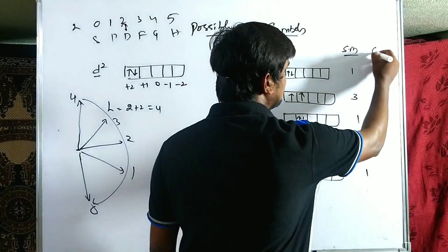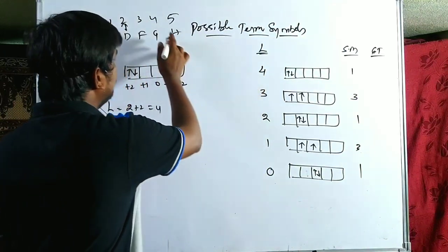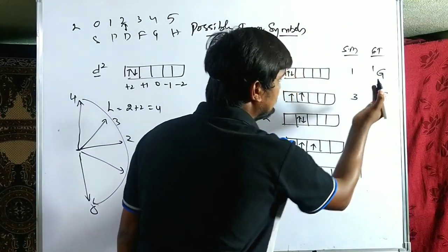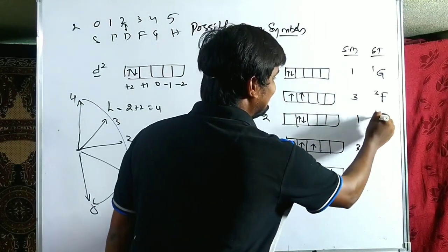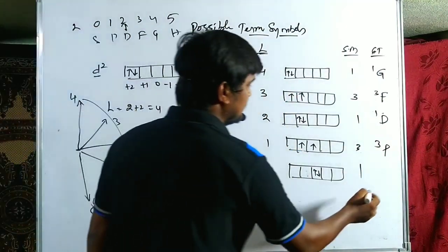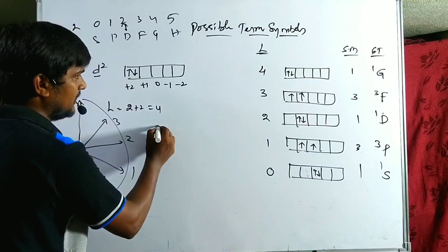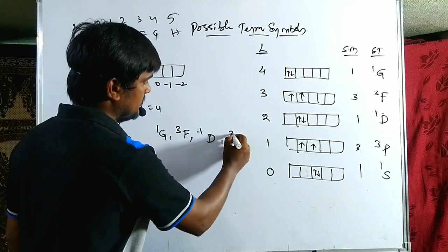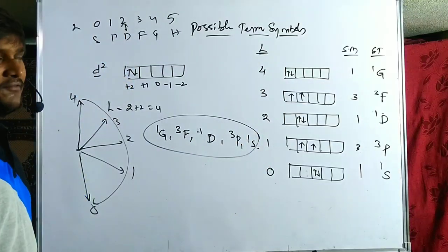Using the term letter designations — L = 4 is G, L = 3 is F, L = 2 is D, L = 1 is P, L = 0 is S — the possible term symbols for d² configuration are: ¹G, ³F, ¹D, ³P, and ¹S. These five term symbols are the complete set for d² configuration. Let us verify that they account for all 45 microstates.